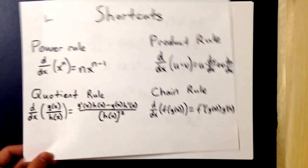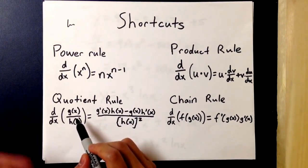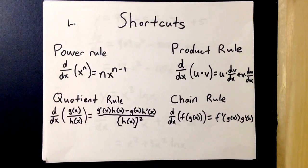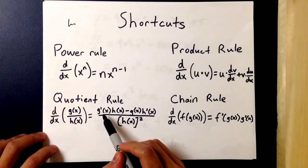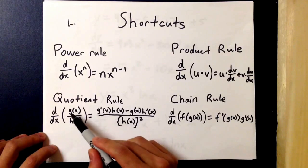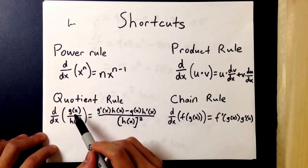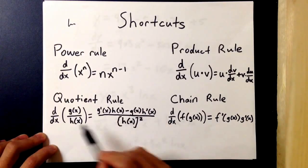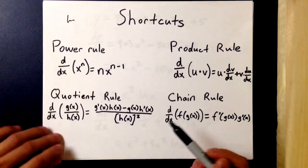Next up, we have the quotient rule which is used when you need to find the derivative of g of x over h of x. The derivative of this equals the derivative of the upper function times the lower function minus the upper function times the derivative of the lower function, and this is all divided by the lower function squared.